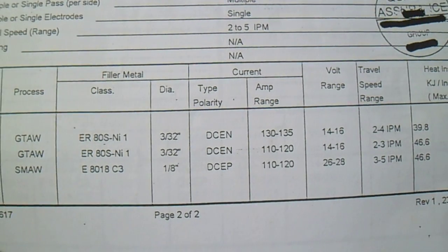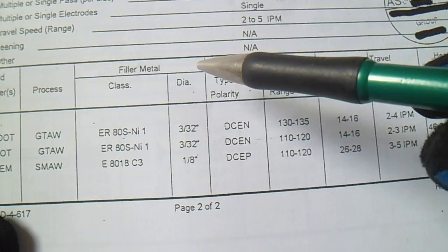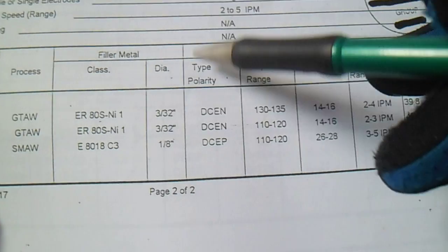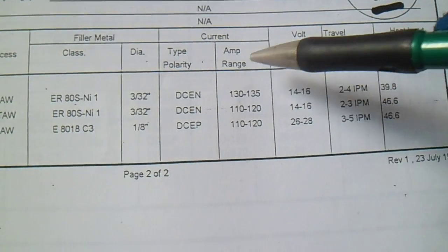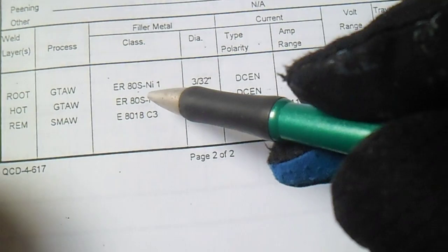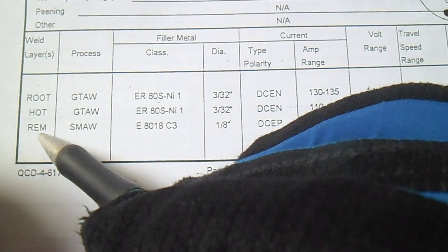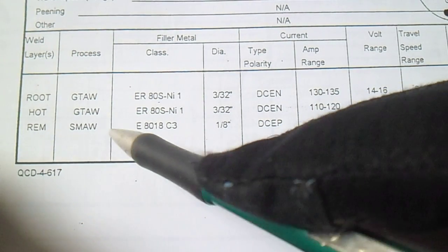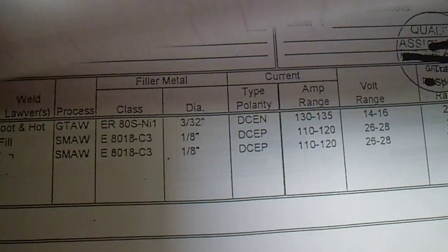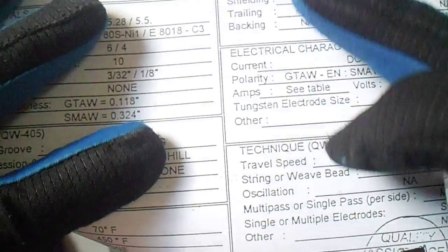The weld layer table shows filler diameter, polarity, amperage, travel speed and heat input of 3 to 5 IPM. The root pass and hot pass use GTAW, and the fill and cap passes use SMAW with E8018.